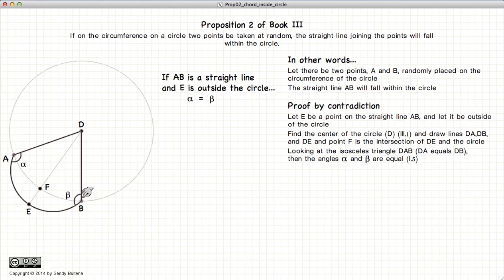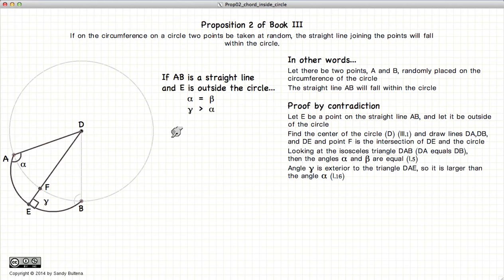Now if we look at this isosceles triangle, DA is equal to DB. Therefore, the angle alpha is equal to the angle beta. So we have alpha equals beta. Now from Proposition 16 from Book 1, if you recall,